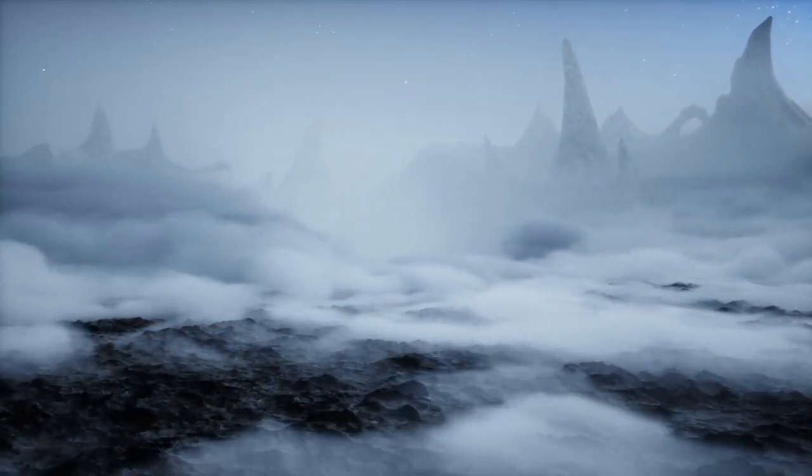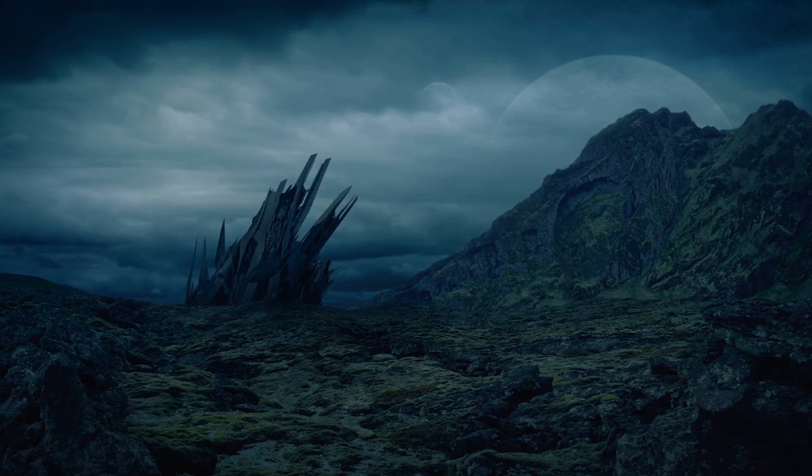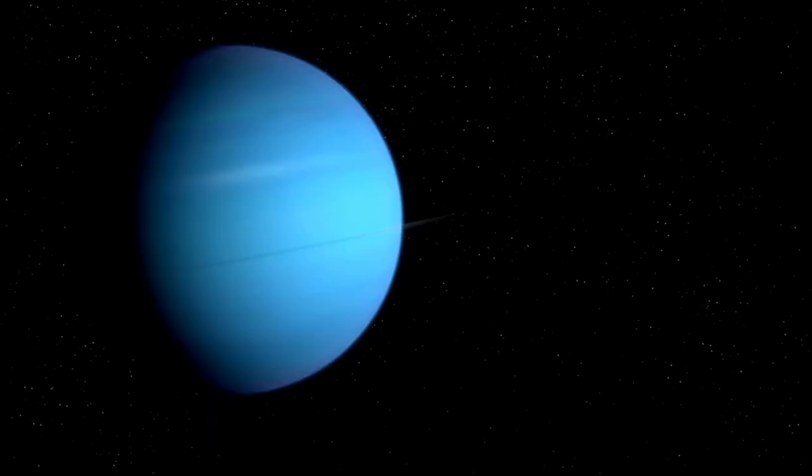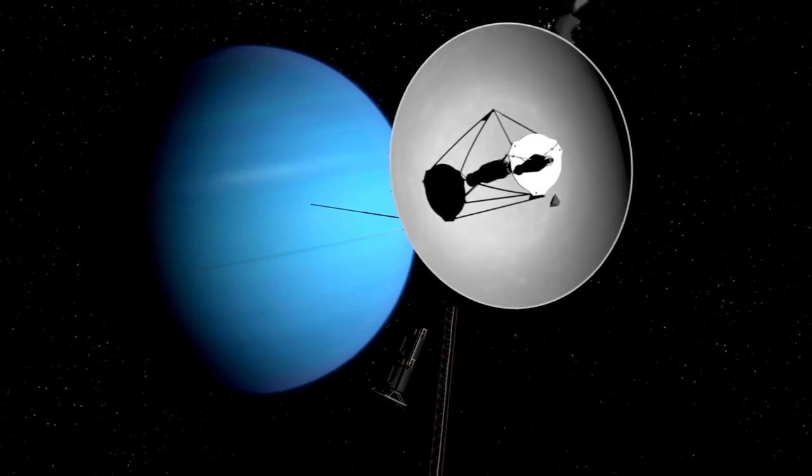Uranus's atmosphere is mostly hydrogen and helium, with a small amount of methane and traces of water and ammonia. The methane gives Uranus its signature blue color.